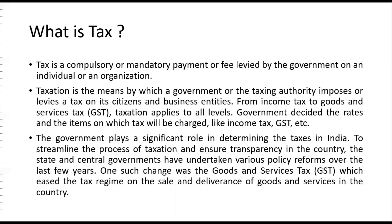The third component is that it is levied by the government — no one other than the government levies tax on different individuals and organizations. The fourth point is that tax is levied on both individuals and organizations depending upon their respective liability and the respective rates prescribed in the budget every year. These four components can be taken from the definition of tax, and a simple one or two liner definition can help you solve easy MCQ questions for UGC NET Commerce.